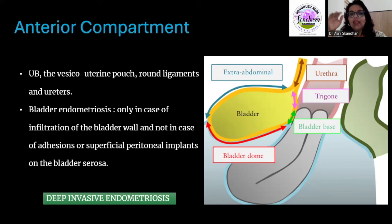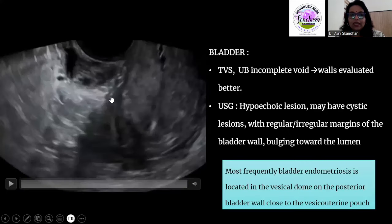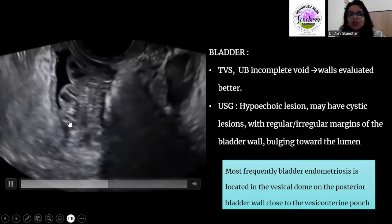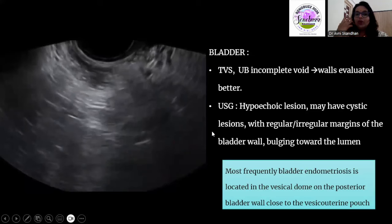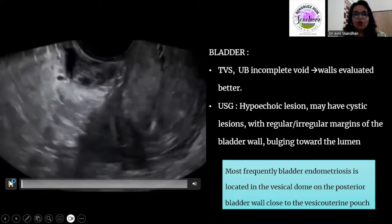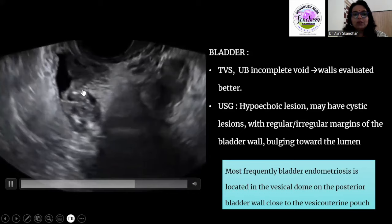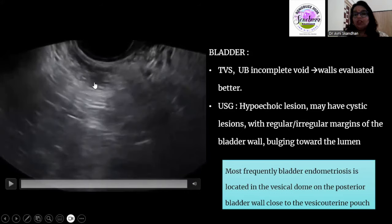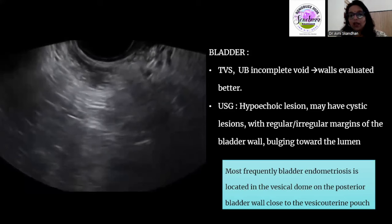That is how deep deposits appear in all locations. Additional pointers favoring endometriotic deposits include the fibrosis they cause and the changes that fibrosis produces in adjacent structures. Looking at the appearance in the bladder, you can see a structure growing within the bladder — a deposit growing from the bladder wall intraluminally with cystic spaces. It is very important that an endometriotic deposit touching the bladder wall should not be labeled as bladder endometriosis; bladder endometriosis is only when it has invaded the muscular wall or is seen intraluminally. Supporting clinical evidence includes a history of cyclical, painful hematuria.